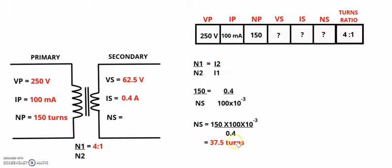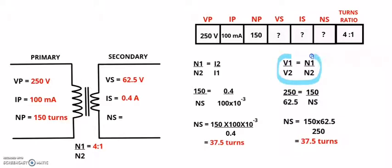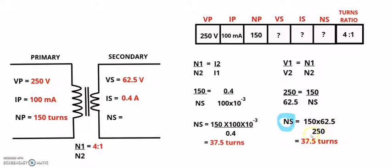I'll also show you how to get the same result using the voltage and turns ratio. Using V1 over V2 equals N1 over N2: 250 over 62.5 equals 150 divided by Ns. Making Ns the subject: Ns equals 150 multiplied by 62.5 divided by 250, which also gives 37.5 turns on the secondary side.